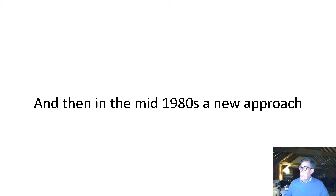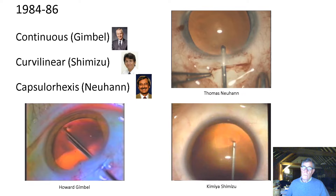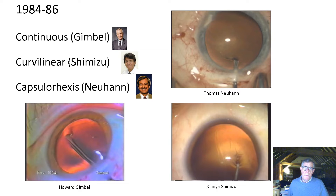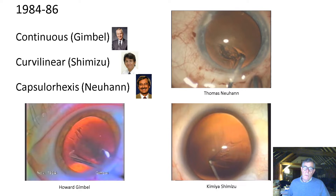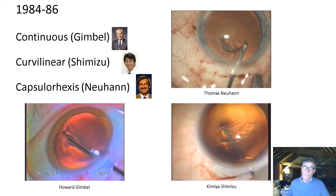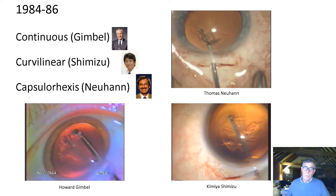In the mid-1980s we had a new approach: the continuous curvilinear capsulorhexis. Howard Gimbel gave us 'continuous', Kimia Shimizu called it 'curvilinear', and Thomas Neuhan called it 'capsulorhexis'. But the object of what they were trying to achieve was a smooth edge, and you can see their different methods of trying to achieve this, each of them using a cystotome.